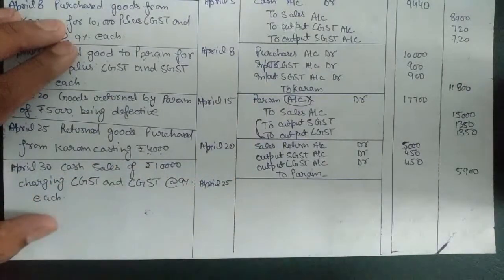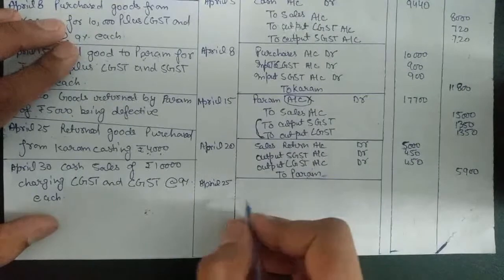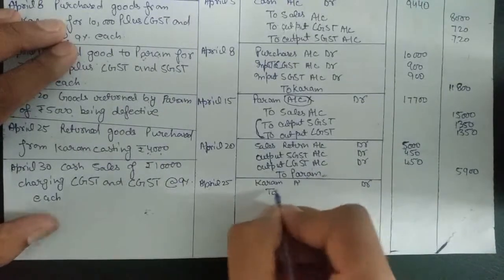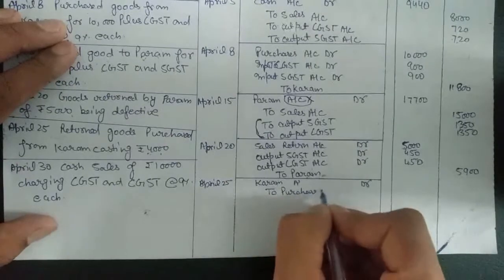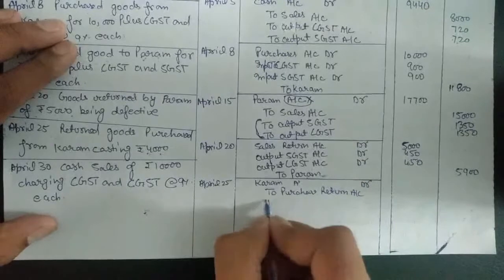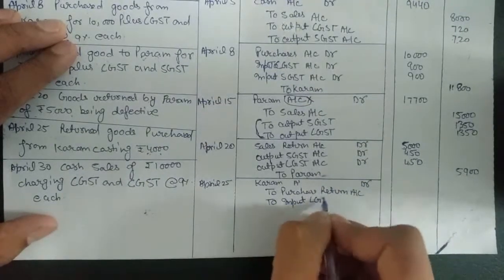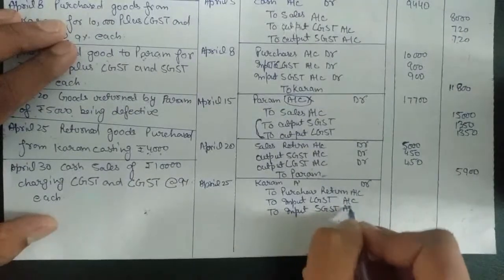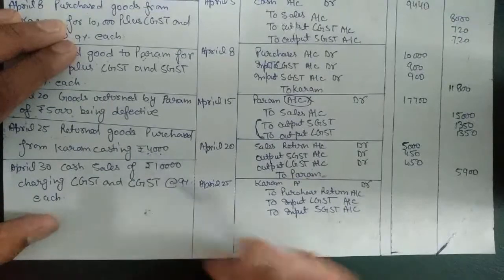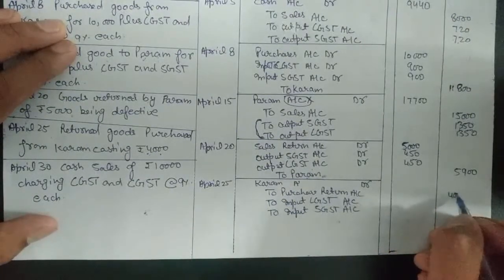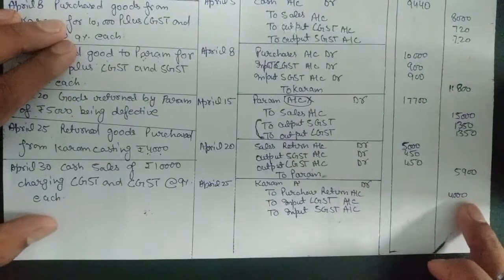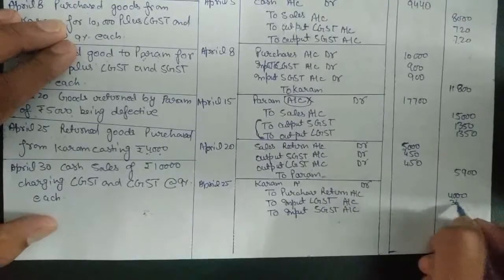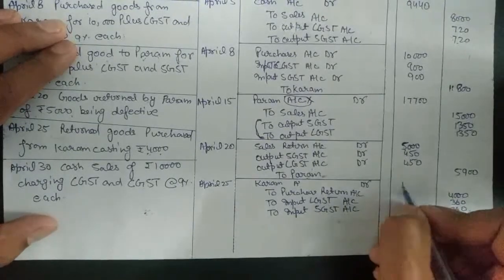In case of purchase return we also need to reverse the entry, and the entry will go in the name of Karam. Karam debit, to Purchase Return account, to Input CGST account, to Input SGST account. The goods we are returning to Karam are worth ₹4,000, which goes in front of Purchase Return. The GST we will receive back is 9% of ₹4,000, which is ₹360 and ₹360. The total amount of goods returned is ₹4,720.